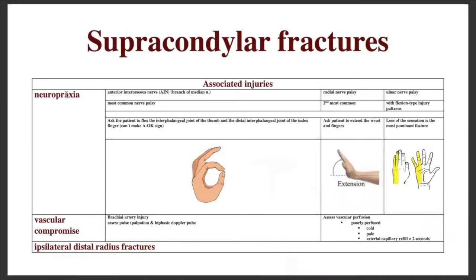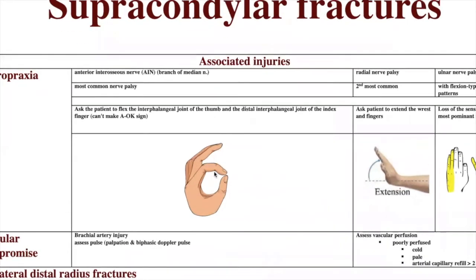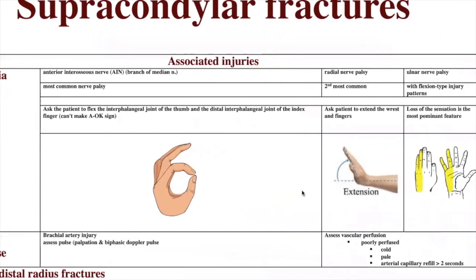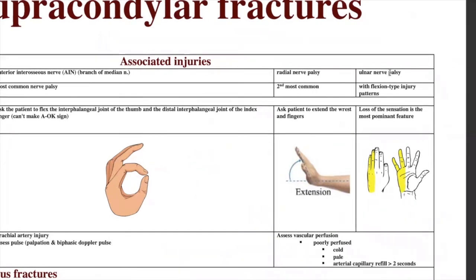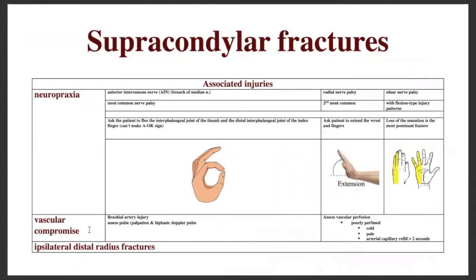To assess nerve injury: the anterior interosseous nerve — a branch of the median nerve and the most common nerve palsy — is assessed by asking the patient to make the 'OK' sign; inability to do so suggests anterior interosseous nerve injury. Radial nerve palsy presents with wrist drop and inability to extend. Ulnar nerve palsy usually affects the sensory distribution.